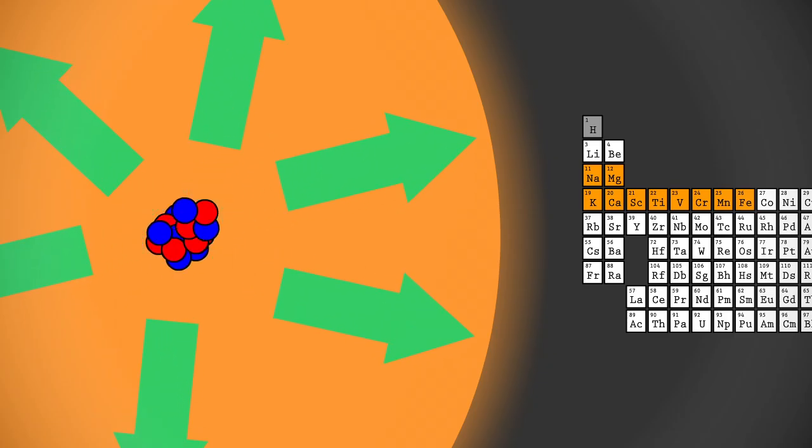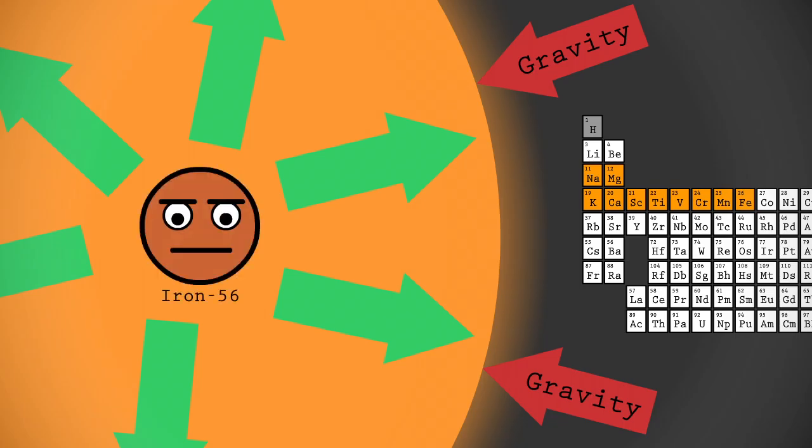But there is a limit to a star's ability to fuse smaller elements into larger ones. When small nuclei are fused together, the nuclear reaction releases energy, supplying the pressure needed to keep a large star from collapsing onto itself. But we reach a problem when a star forms iron-56.